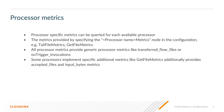We also have the processor metrics, which are a bit different. They provide processor specific metrics that can be queried for each available processor in your flow. These metrics are provided by specifying the processor name with the metric suffix in the configuration, like tailfile metrics and getfile metrics. All of these processor metrics provide generic processor metric values, like the transfer flow files or the on-trigger invocation count. But there are some processors that implement additional specific metrics, like the getfile metrics that additionally has accepted files and input files metrics.